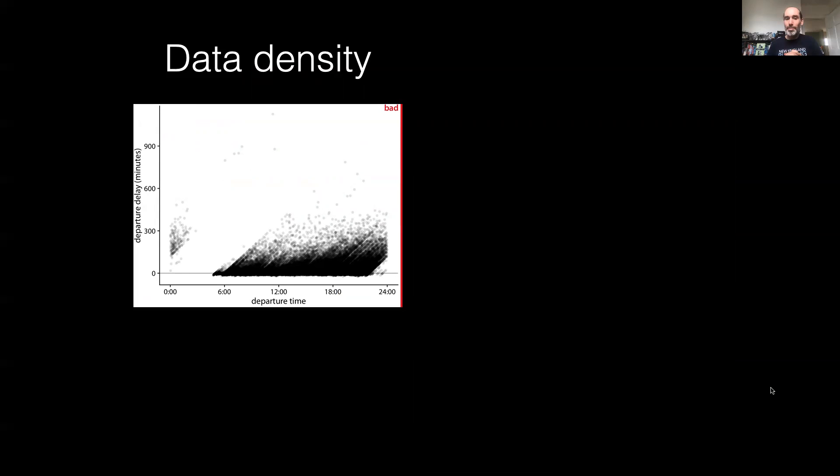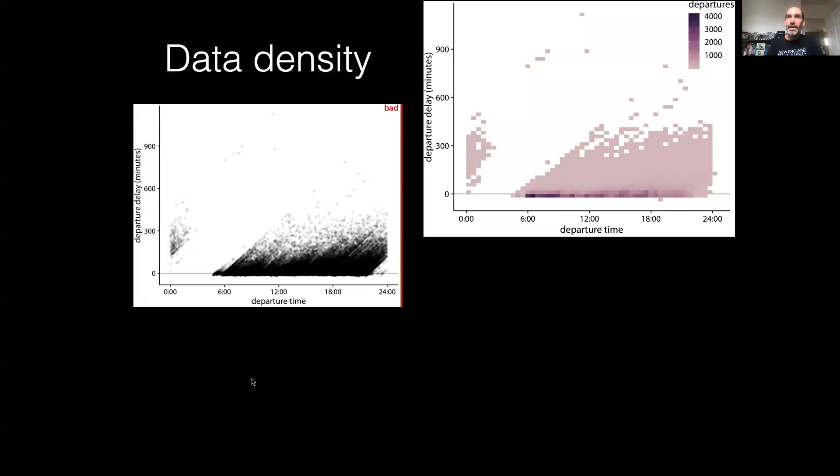This next figure represents an example where jittering isn't going to cut it. We have a truly large volume of data with points being plotted on top of each other. Even though we've used transparency in this figure, there's enough volume of data on top of each other that it's saturating. The black gets to a point where we can't tell differing shades of black. So what do we do when we have these really high data densities?